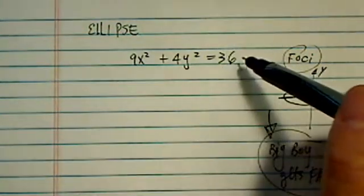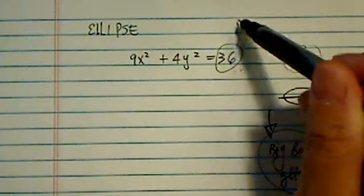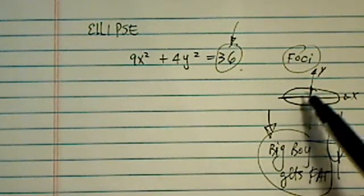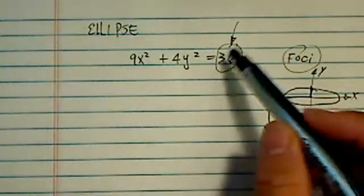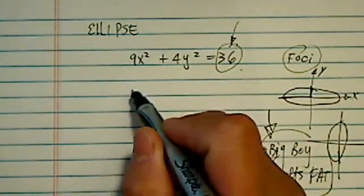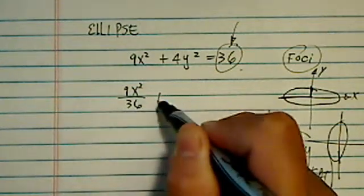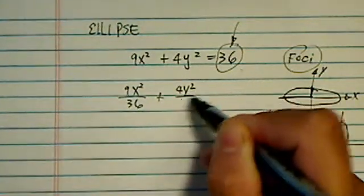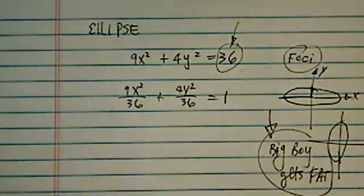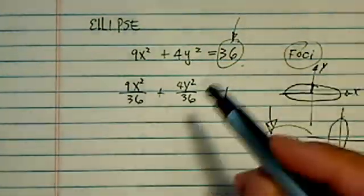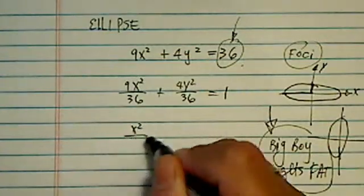First thing we're going to do is, ellipse is kind of like a circle, in that we have to normalize. We've got to compare the major x and the minor x, and by doing that, we're going to divide it by 36. So we have x squared divided by 36, and 4y squared divided by 36, then we're going to normalize it into 1. Because we have to normalize, we've got to compare which one is bigger than the other one.